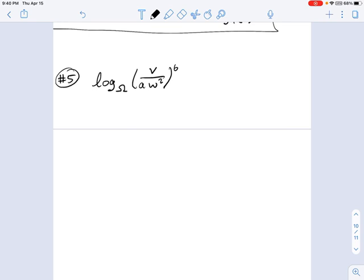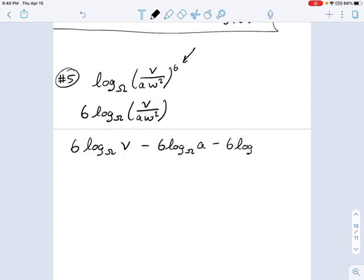So the first thing I want to do, though, is actually use the power rule, because outside this entire thing is that power of the 6th. So what you can do is you can rewrite this as 6 log base omega of v over aw squared. Okay, now as you expand this out, you would need to then multiply 6 against each one of the logs. This could become 6 log omega of v minus 6 log omega of a minus 6 log omega of w squared.